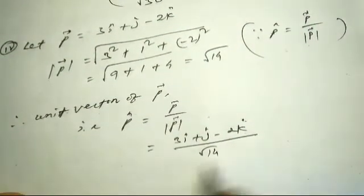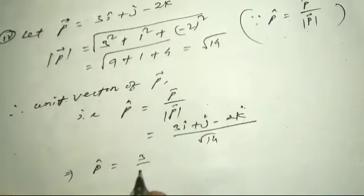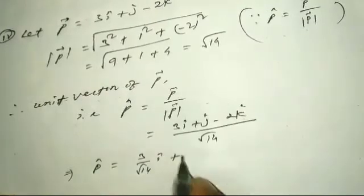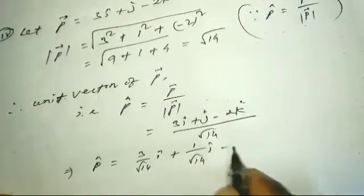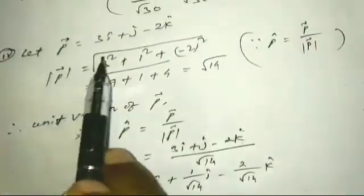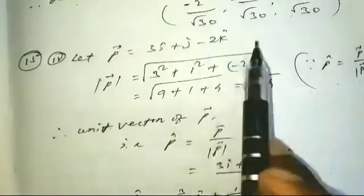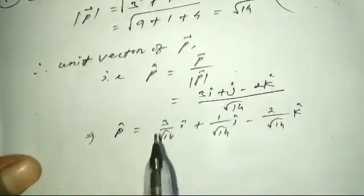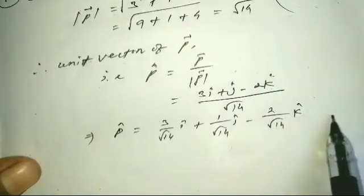So the unit vector is: 3 divided by square root of 14 i-cap, plus 1 divided by square root of 14 j-cap, minus 2 divided by square root of 14 k-cap. This is the answer for question 15.